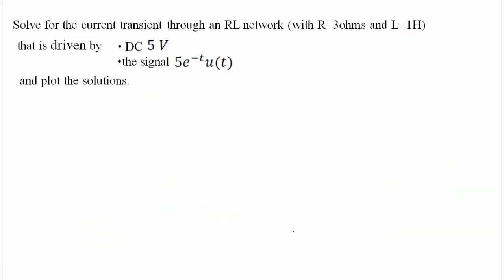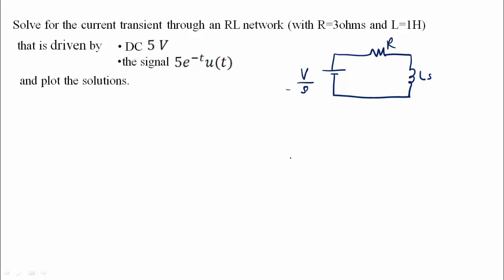Using Laplace transform, V becomes V by S. With V equal to 5 volts, V by S is the source. The resistance is 3 ohms and the inductance L becomes LS in the transform circuit.